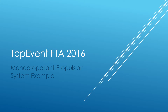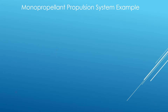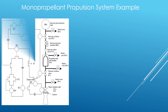The fault tree that we'll evaluate is included in the monopropellant propulsion system example. You can find this example in the fault tree handbook with aerospace applications. The monopropellant propulsion system of a small spaceflight vehicle is shown in this figure. The system provides thrust while the vehicle is in orbit.